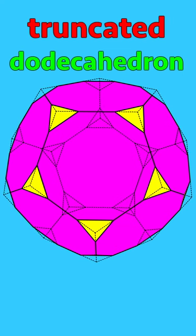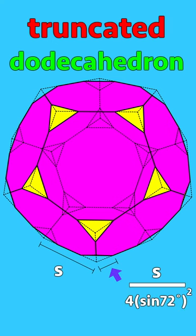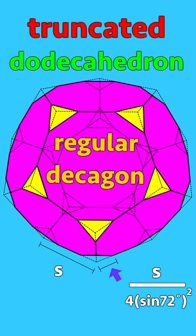If the original edge of the dodecahedron is a length of s, then the edge is truncated by s divided by 4 times sine of 72 degrees squared. As a result, the face is now a regular decagon.